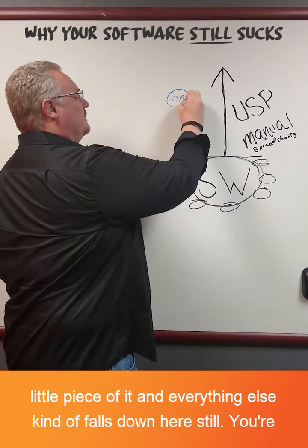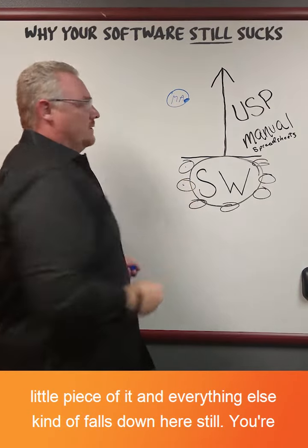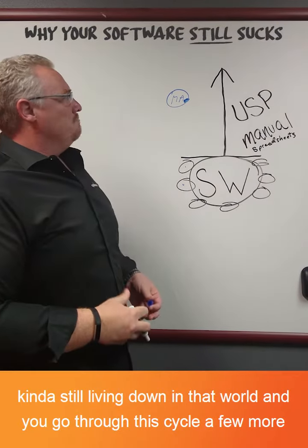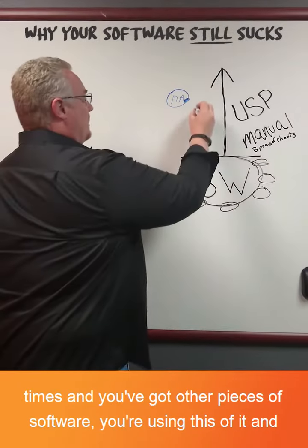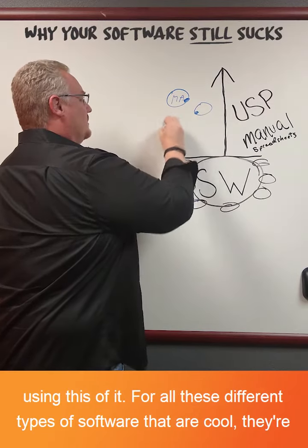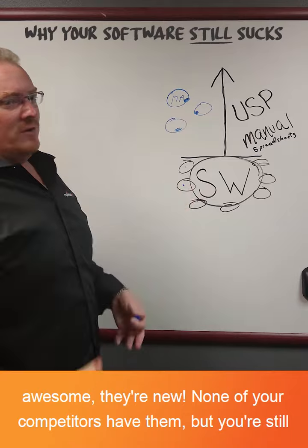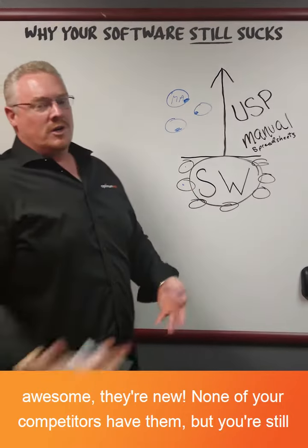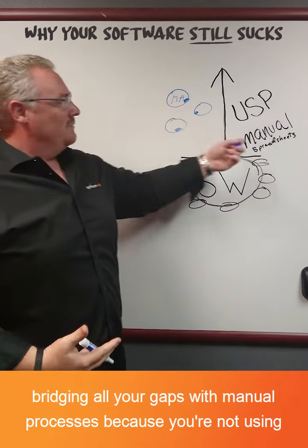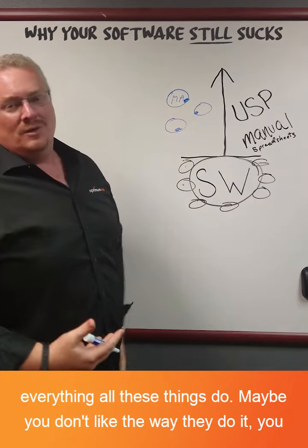You just use this one little piece of it and everything else still falls down here. You go through this cycle a few more times: you've got other pieces of software, you're using bits of each of them, all these different types of cool, awesome, new software that none of your competitors have — but you're still bridging all your gaps with manual processes because you're not using everything these tools can do.